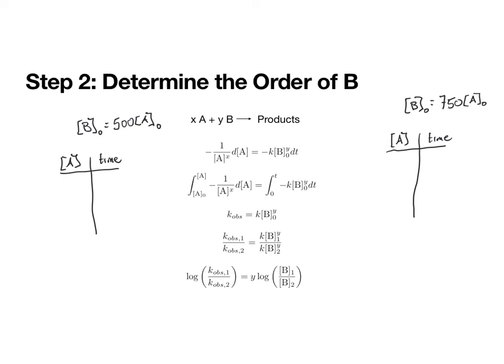And so that means that our K observed, remember that this K observed is equal to K times the initial concentration of B raised to some power, and that means that because we are using different concentrations of B, we will get two different values for K observed for these two experiments.